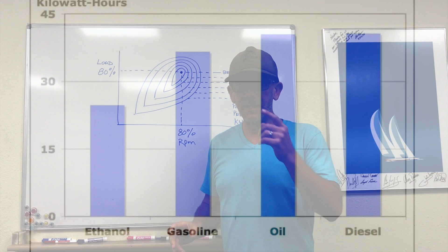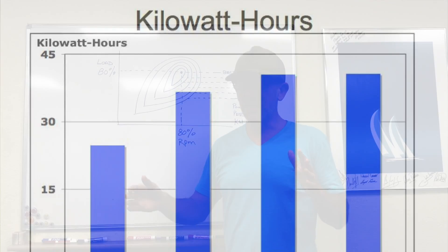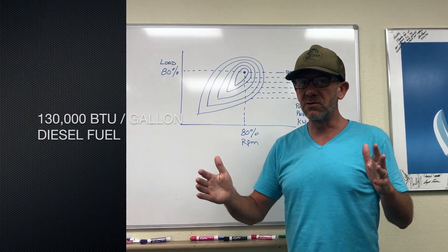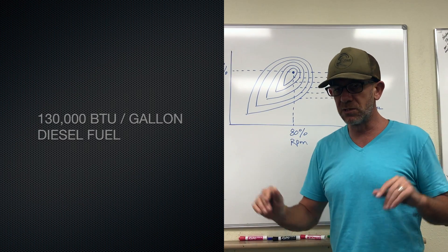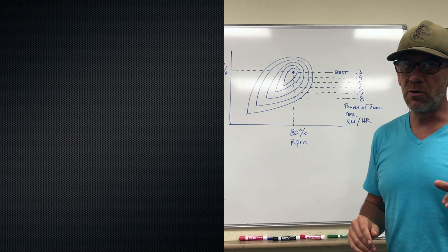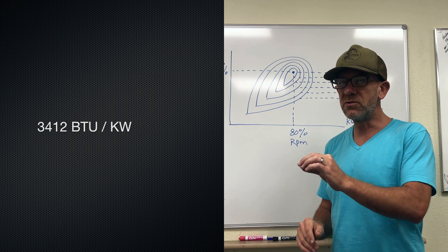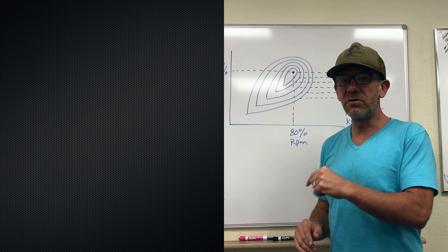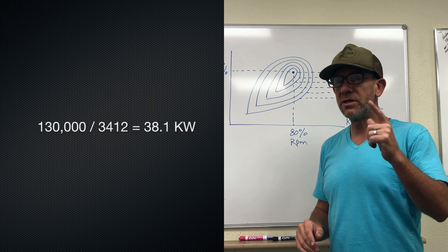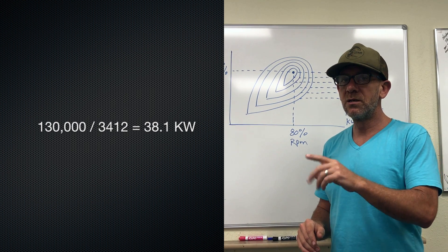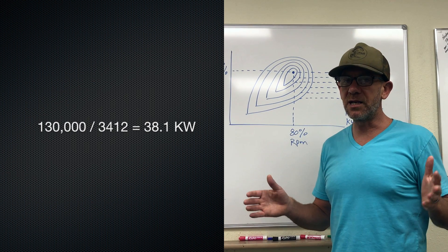What we need to then look at is how much power is available in a gallon of diesel fuel. And we know that's somewhere around 130,000 BTU. That's going to vary a little bit from one diesel fuel to the next, but that's close enough. Now we also know that there's 3,412 BTUs in a kilowatt. So if you divide 130,000 by 3,412, what you end up with is 38.1 potential kilowatts of power in that gallon of diesel fuel.